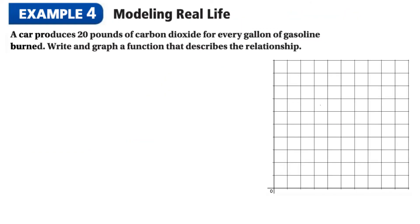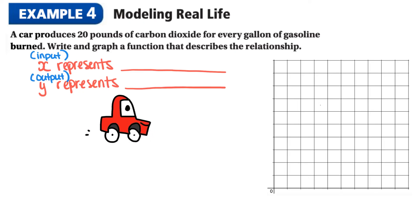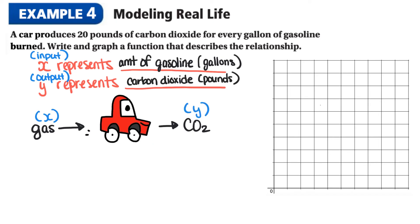Here in our last example we're going to take a word problem and write out the function which is just an equation and graph this function. So the question states a car produces 20 pounds of carbon dioxide for every gallon of gasoline burned. So when we write our function we want to have X and Y represent something so we need to determine what is the input of the situation and what is the output of the situation. A car is just like a machine and to make it work we need to put gas into the car and when the car runs it produces carbon dioxide. So the input is X the amount of gasoline in gallons and the output is Y the amount of carbon dioxide produced in pounds.